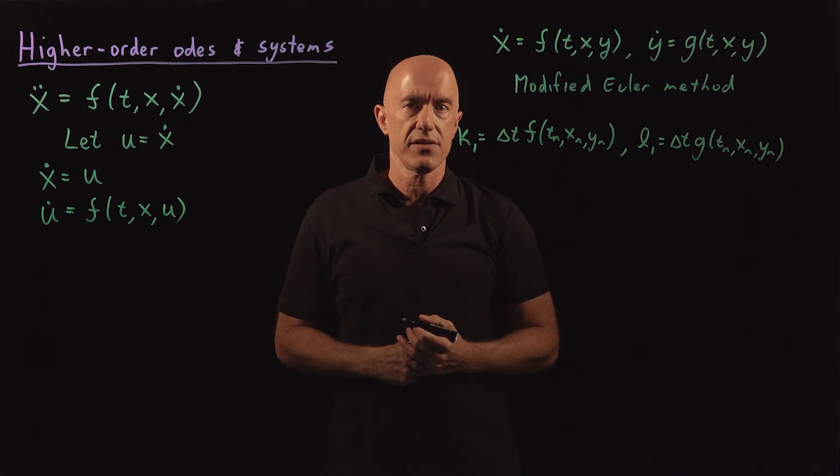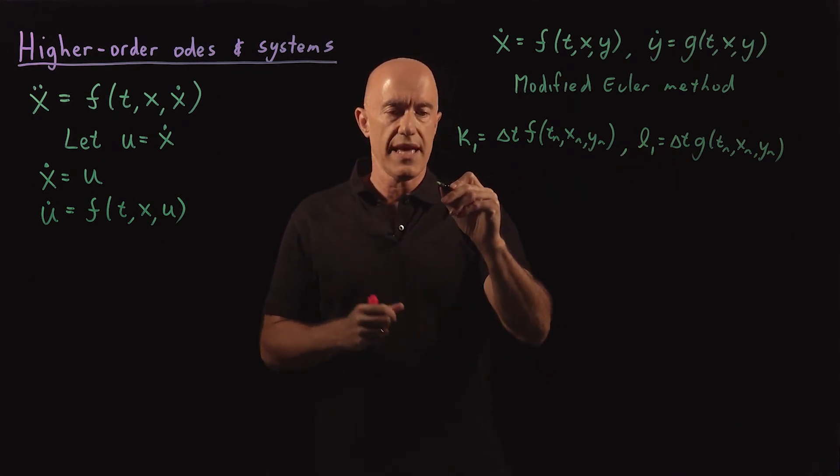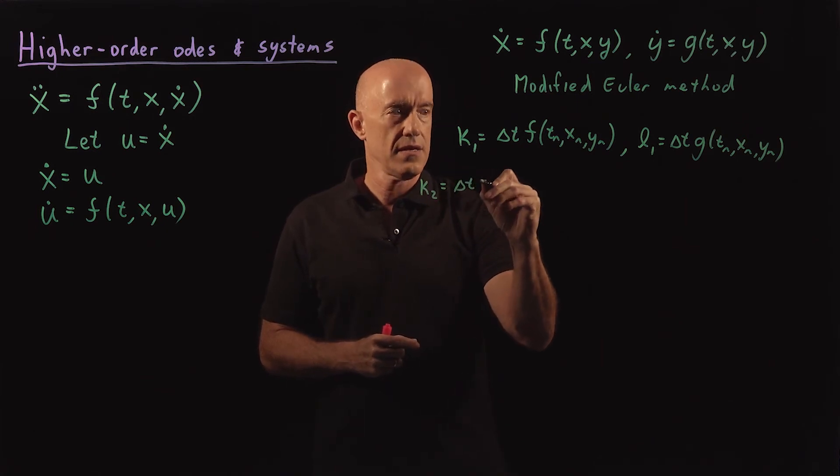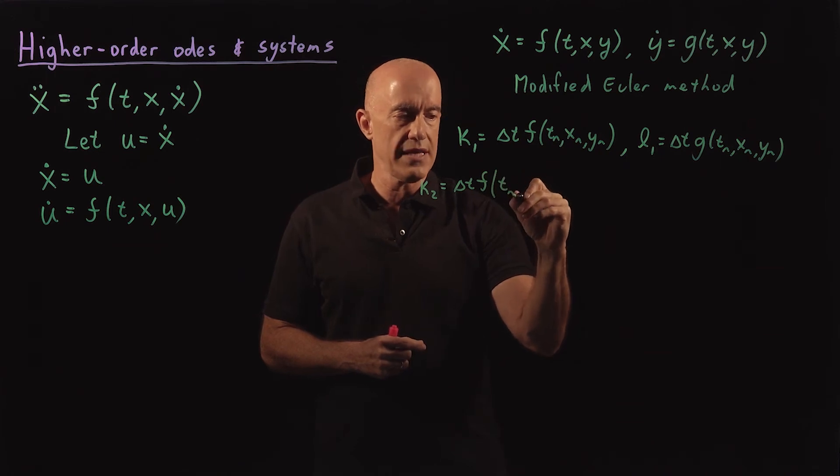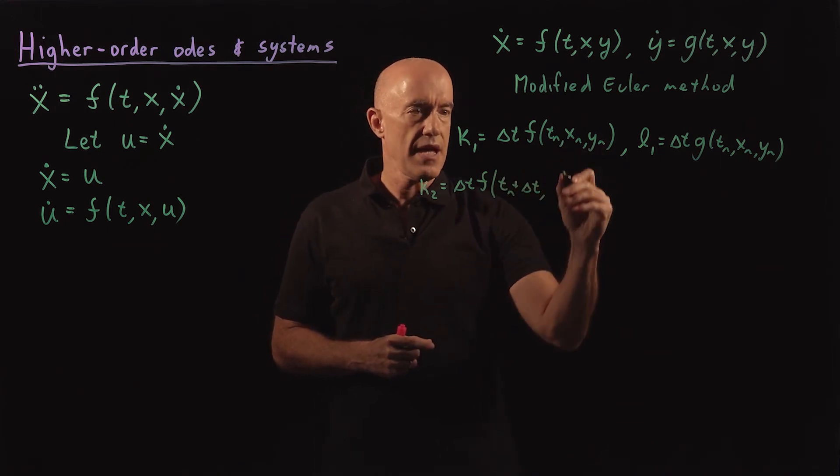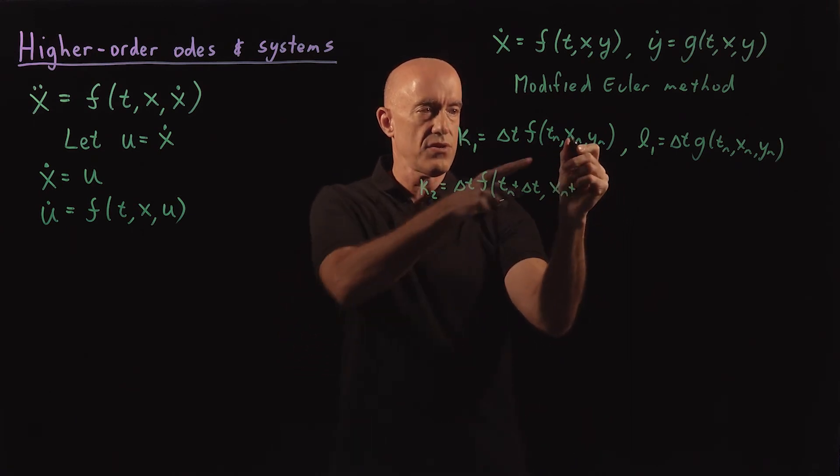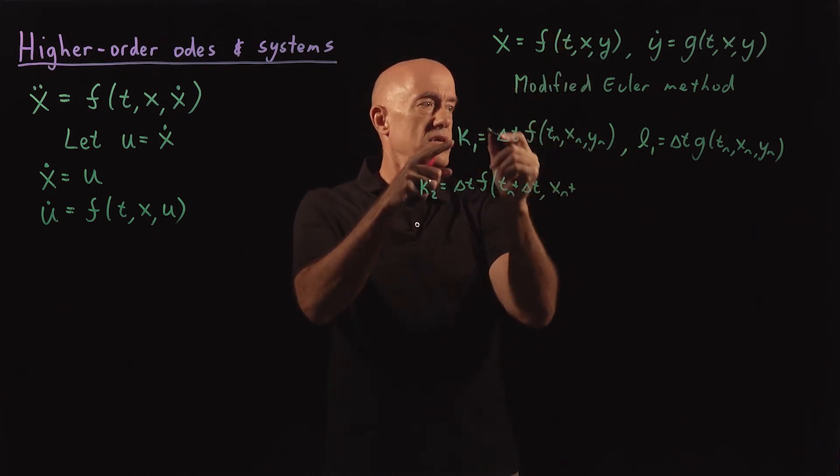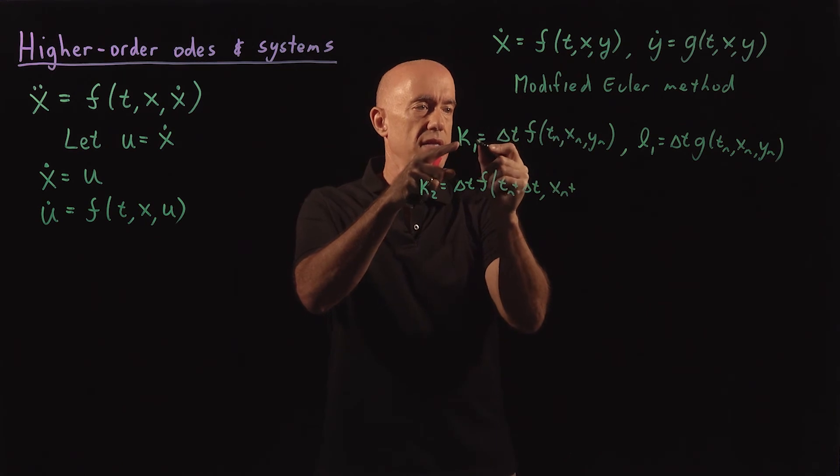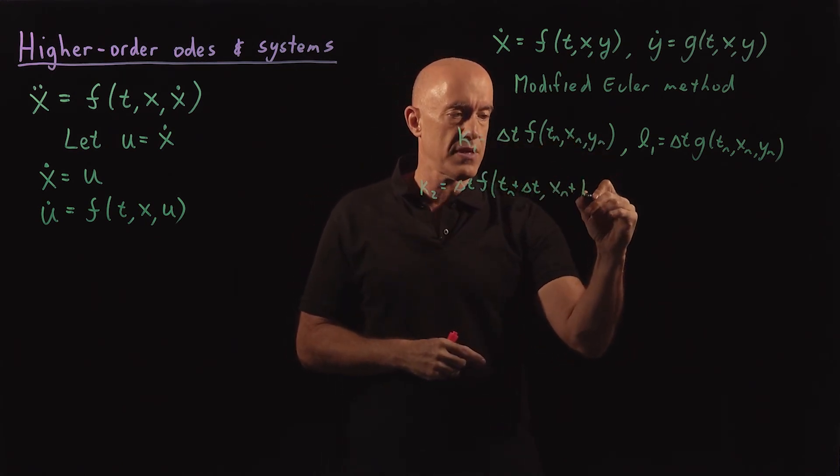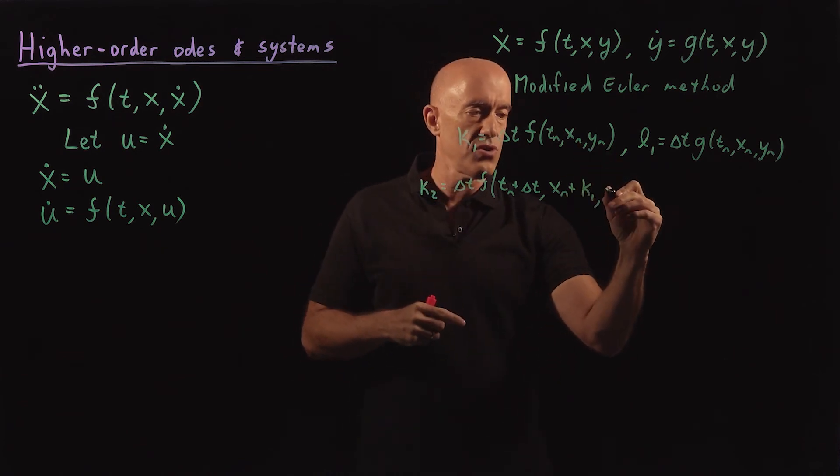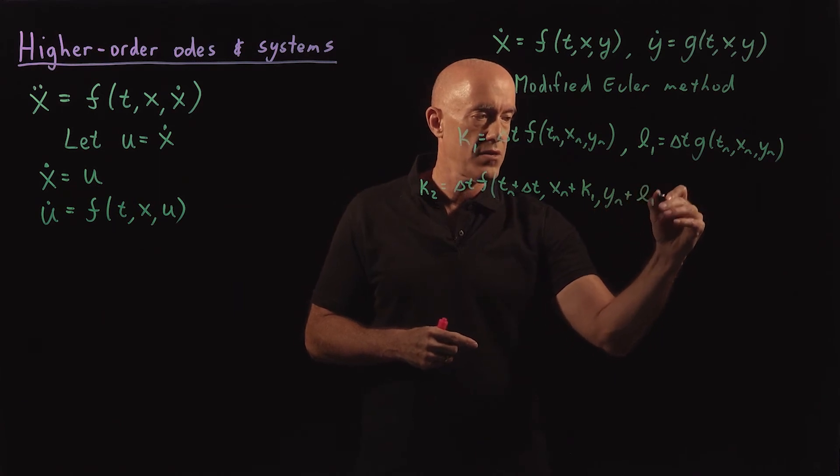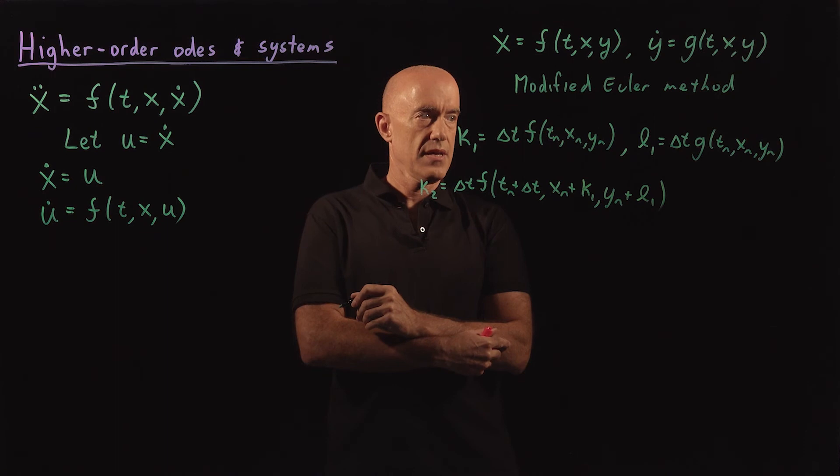Then the second stage of this RK2 method would be K2. So here K2 would be equal to delta t times f. And then we would go tn plus delta t. And then we would go xn, and we need to increment xn. We need to use K1 because this is f here. We need to use K1 to increment xn, so xn plus K1, and then we need to use L1 to increment yn, so yn plus L1.